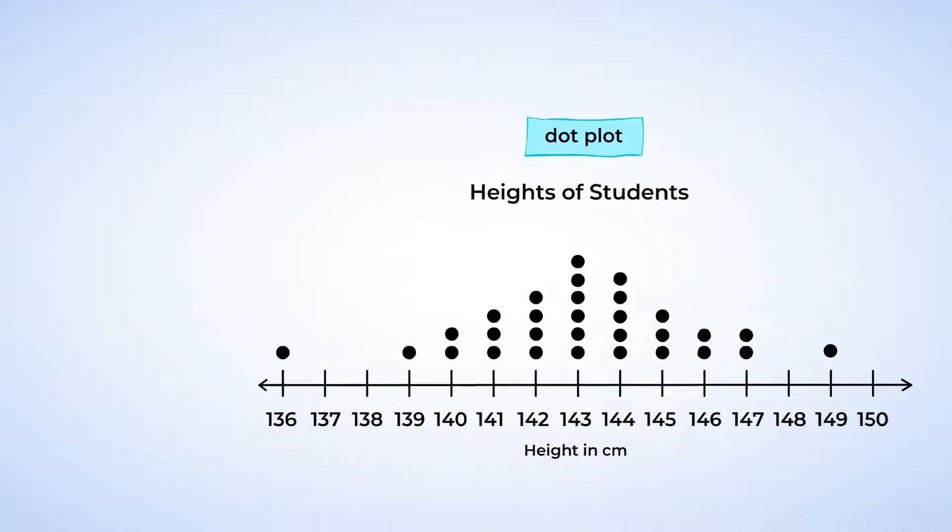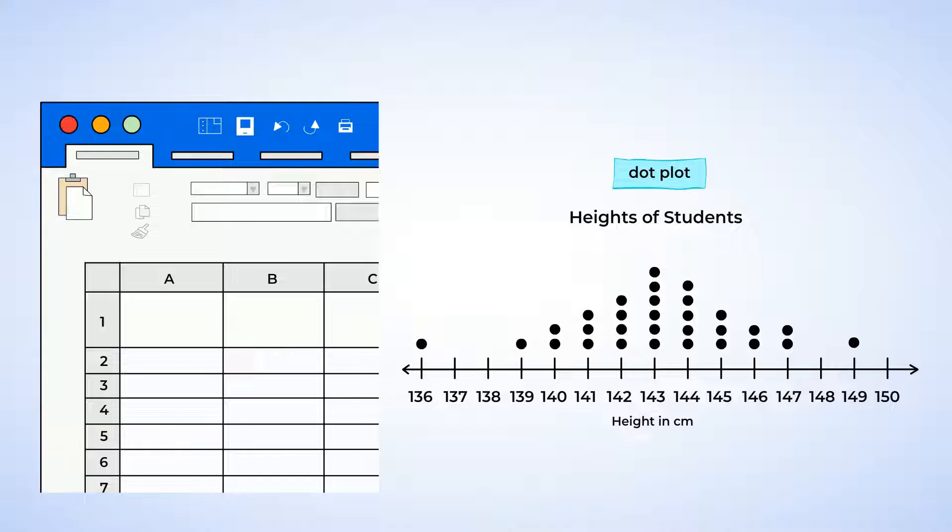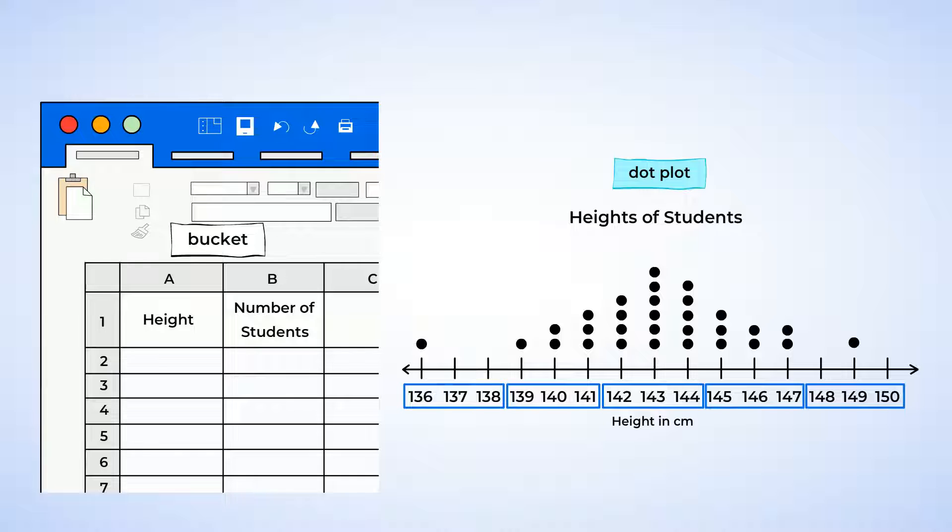Now, we need to group some of the heights together so we can create a range of heights for each bar, also called bucket or bin. For example, we could group every three heights together like this.